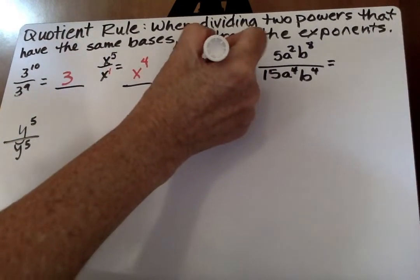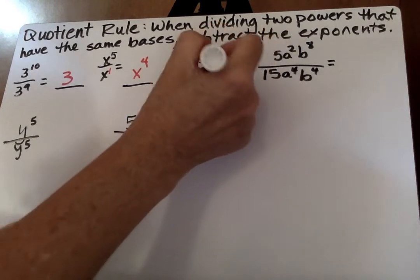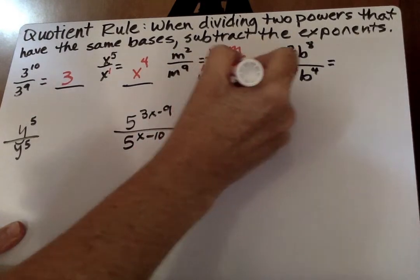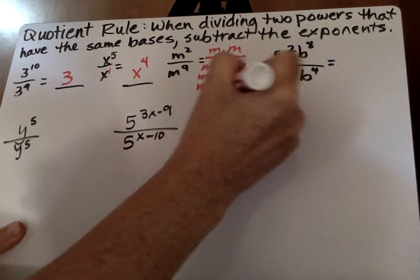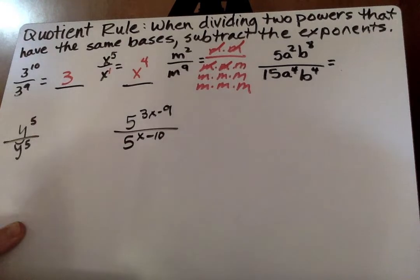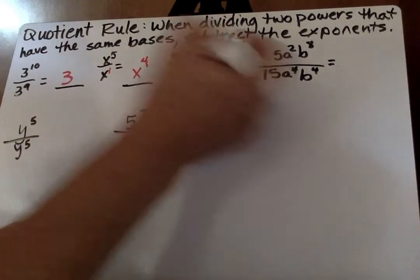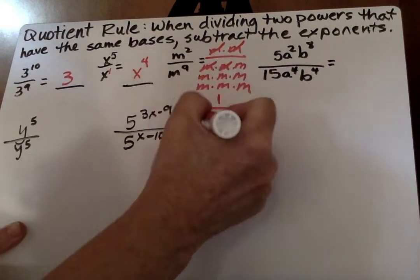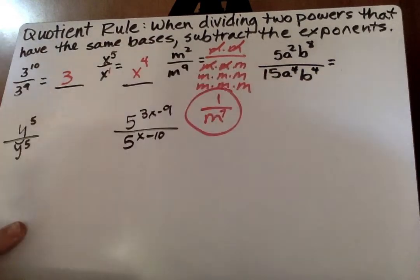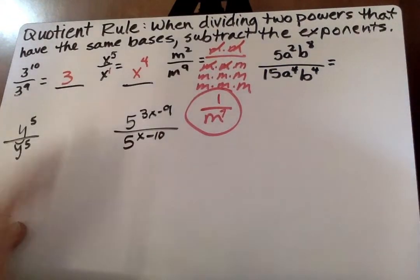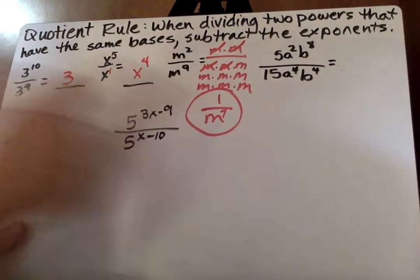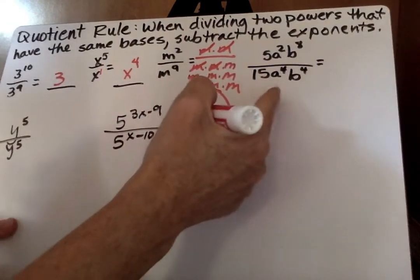You can think of that as m times m over, and then there's 9 m's on the bottom. And m over m is 1, so I can cancel one of those m's with 1 at the bottom. So we're left with 1 on top, and then there's 7 of these m's left on the bottom. So that's 1 over m to the 7th. So here's the math. The long way, the short way would have just been going 9 minus 2 is 7 left on the bottom or on the denominator.